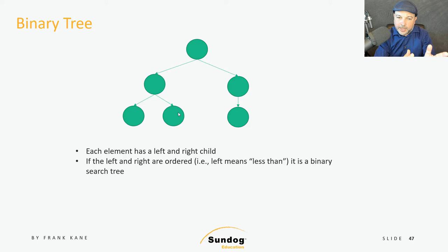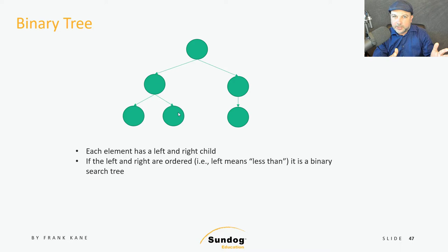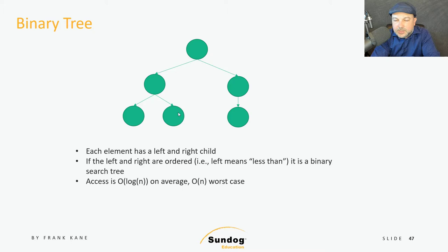Now, if left and right are ordered — meaning that things that are less than the thing I'm looking at go to the left and things that are greater than go to the right — then we call this a binary search tree because it is an ordered binary tree. And this is very useful for search. Less than and greater than doesn't mean it has to be a number necessarily. It just means we have to have some consistent way of saying this value is greater than or less than this value — maybe based on alphabetical sort of strings or something like that.